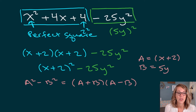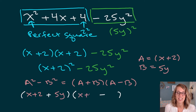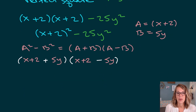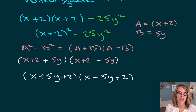Now I have a difference of squares: a squared minus b squared factors into (a plus b)(a minus b). Here a equals x plus 2 and b equals 5y, since 25y squared is (5y) squared. Applying the formula: (x plus 2 plus 5y)(x plus 2 minus 5y). Writing the variable terms first: (x plus 5y plus 2)(x minus 5y plus 2). That is our factorization.